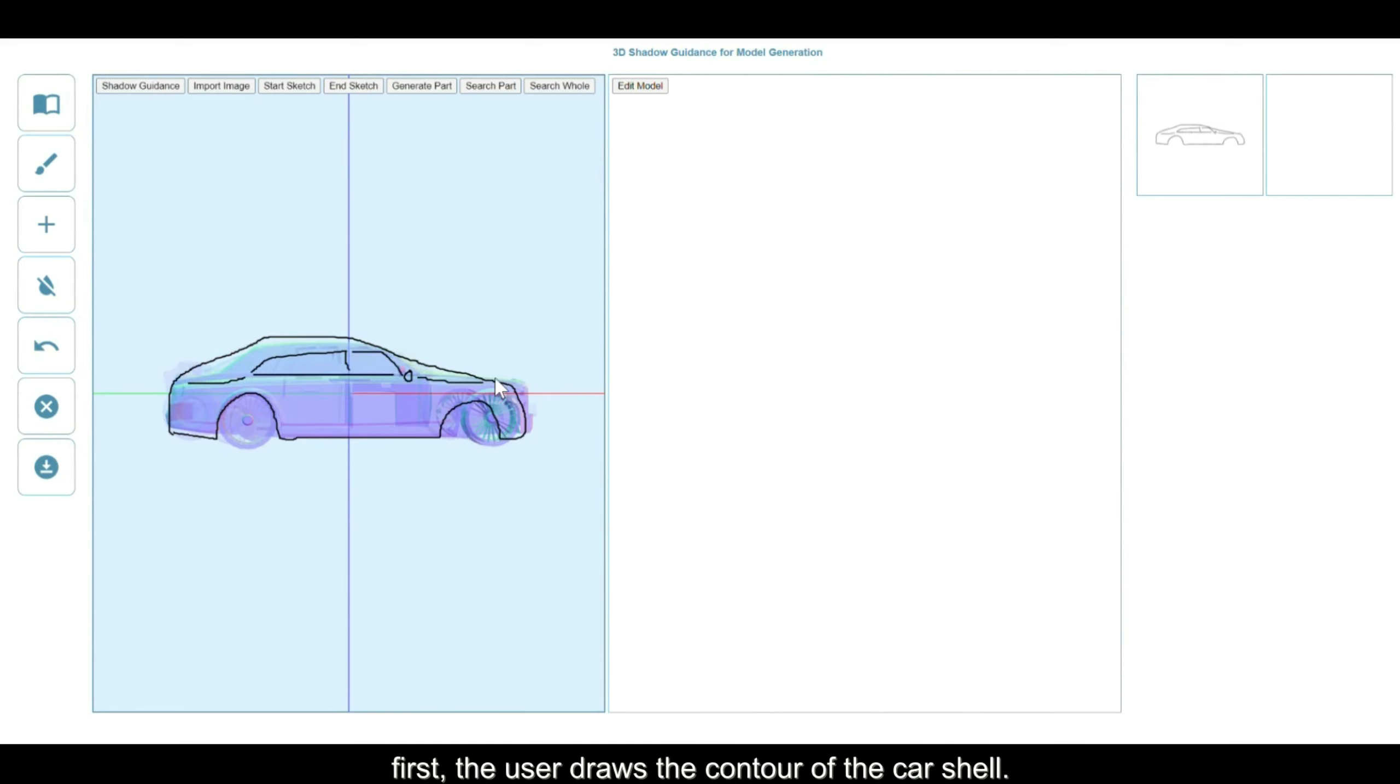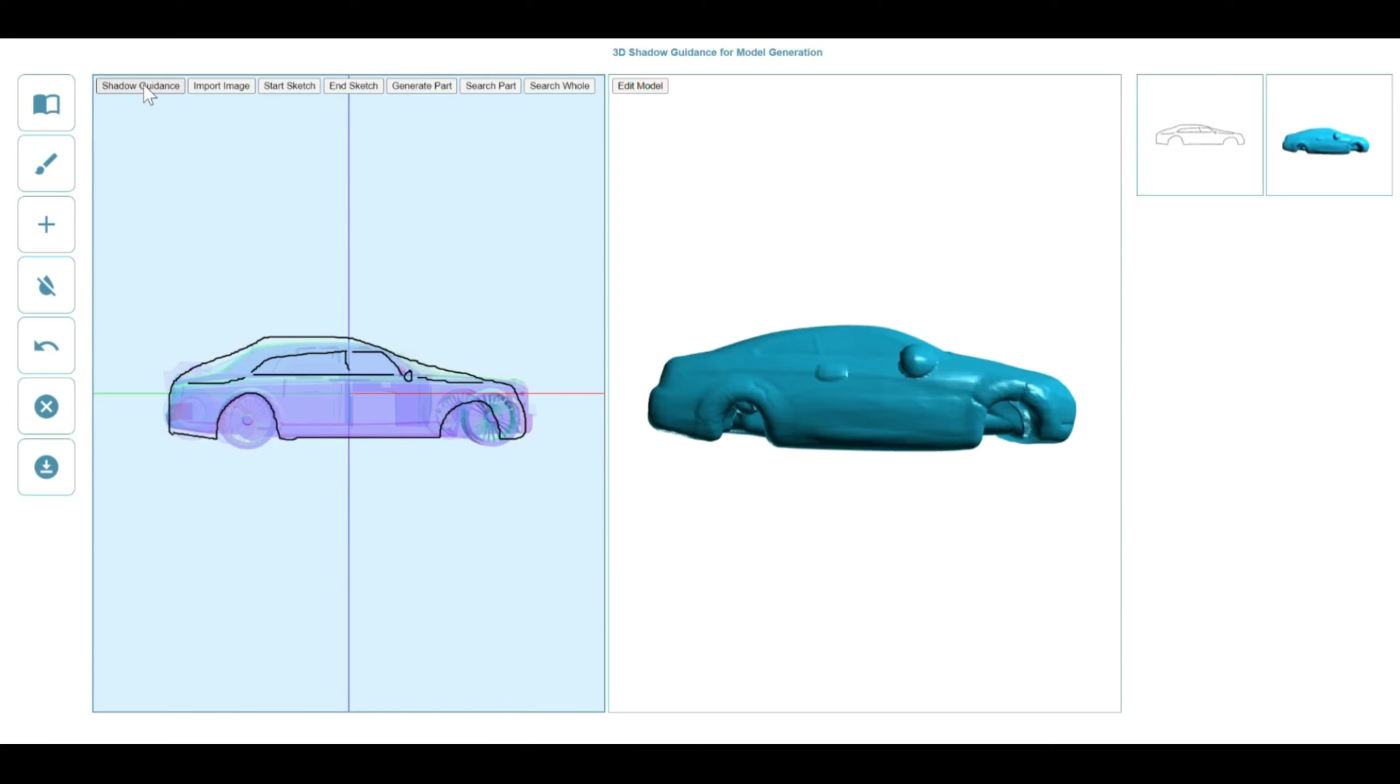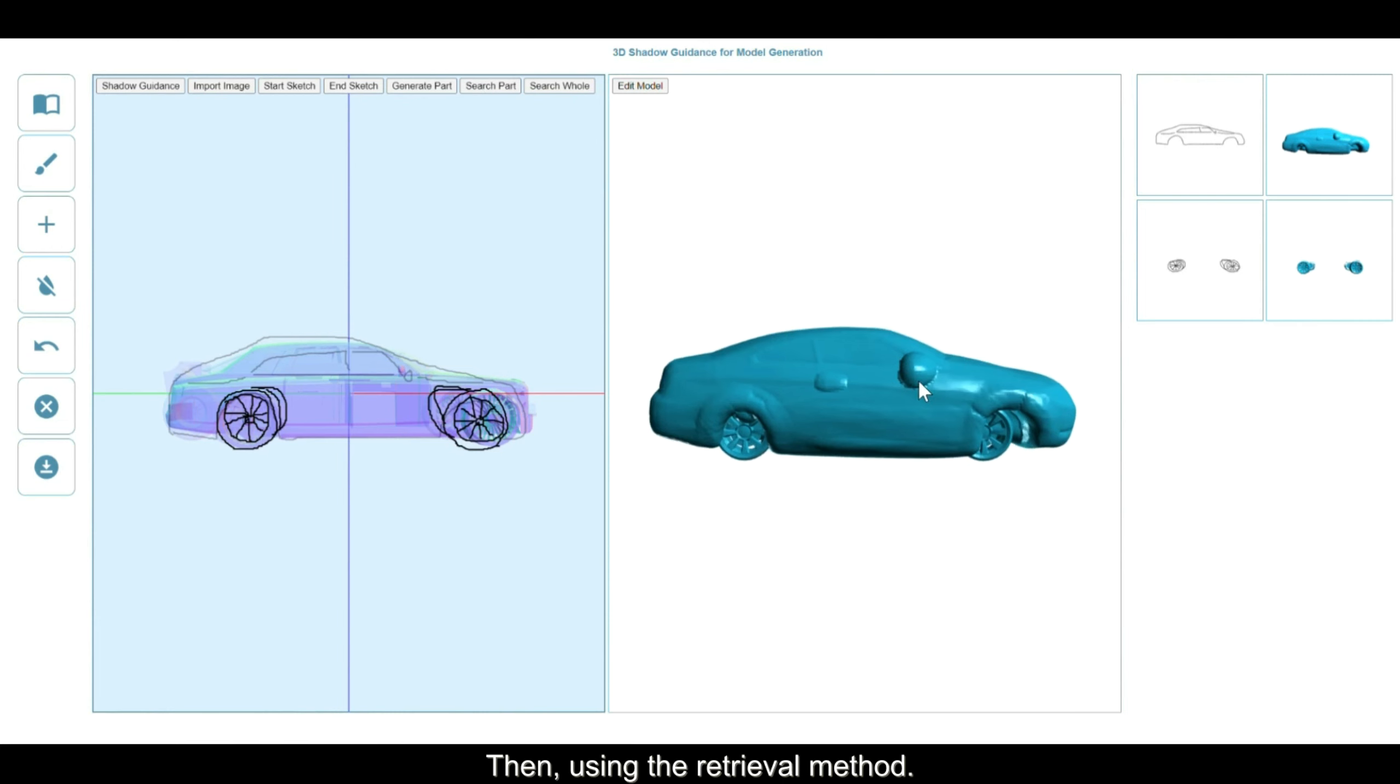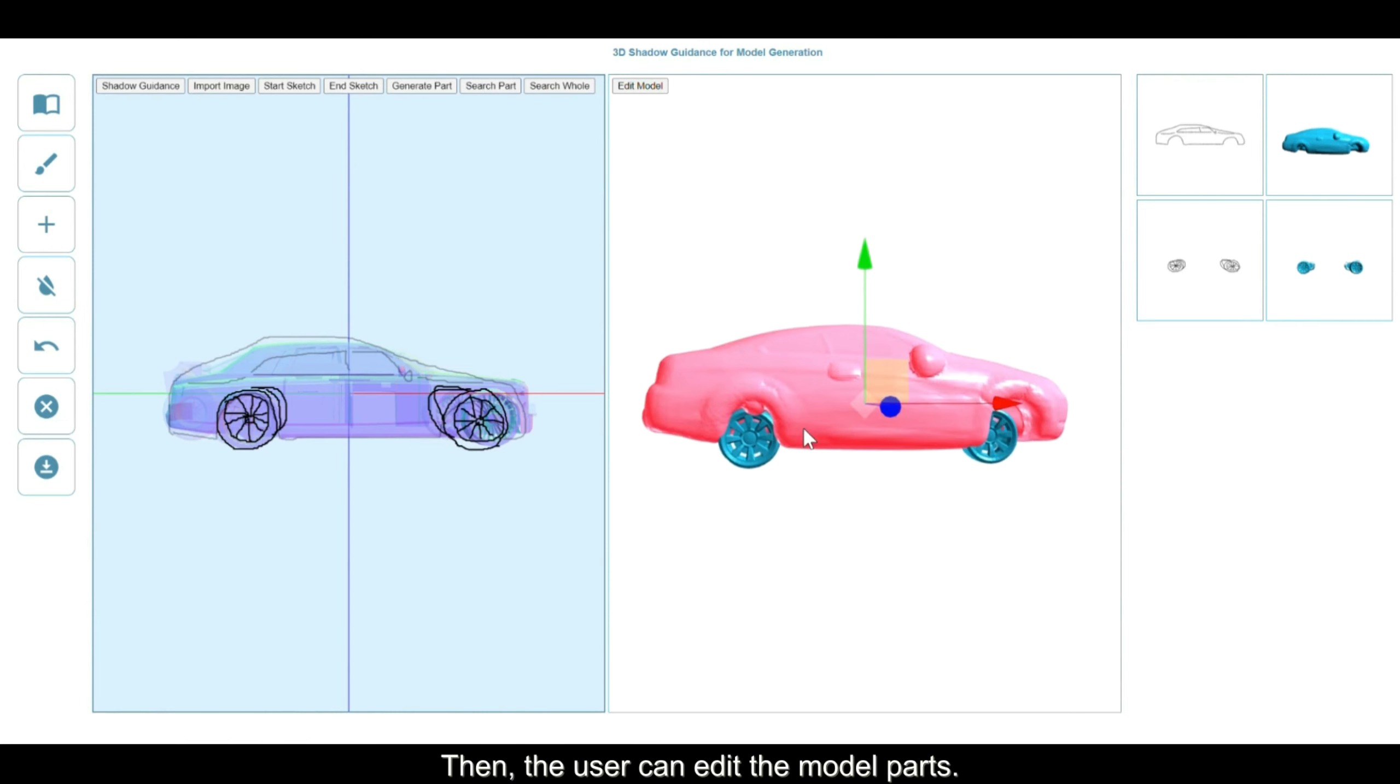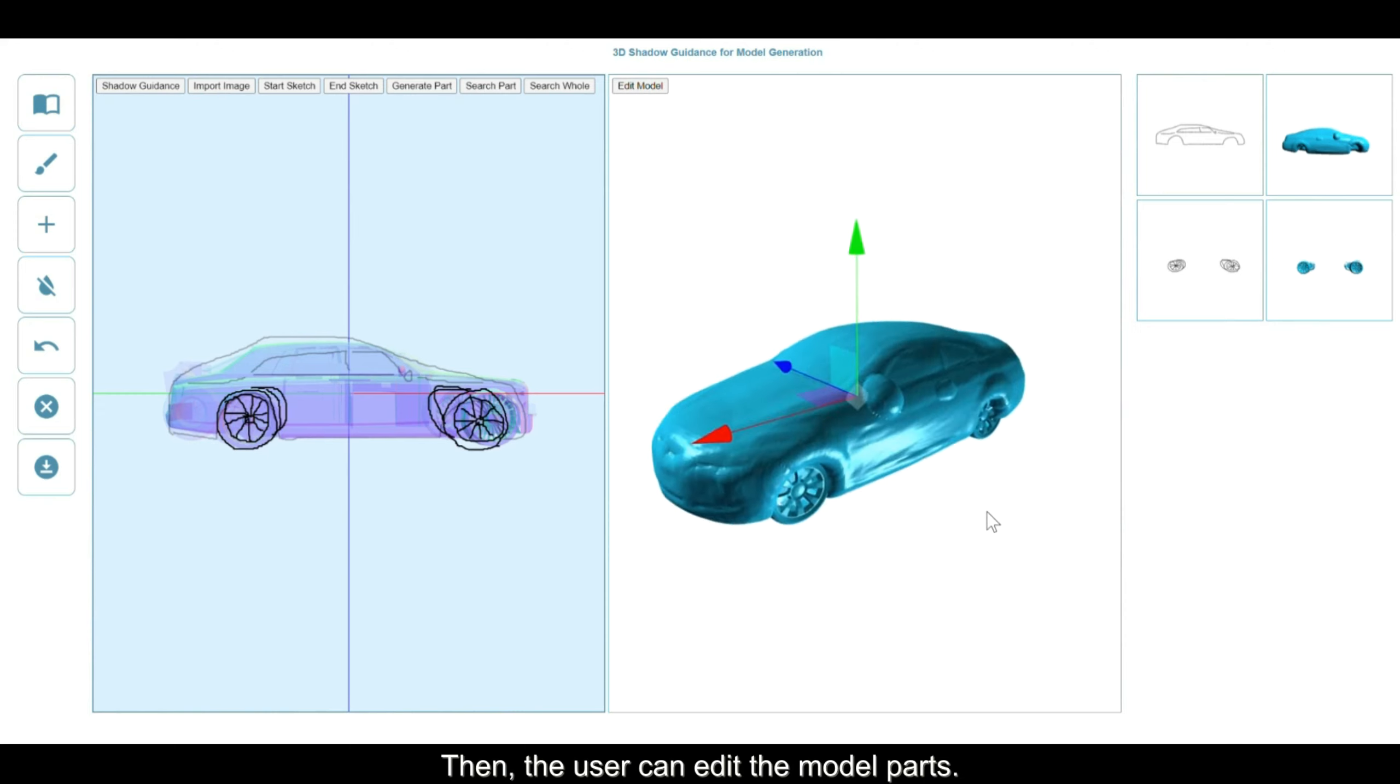Next, the user draws the contour of the tires, then uses the retrieval method to get the corresponding car tire model. Then the user can edit the model parts to get the final result.